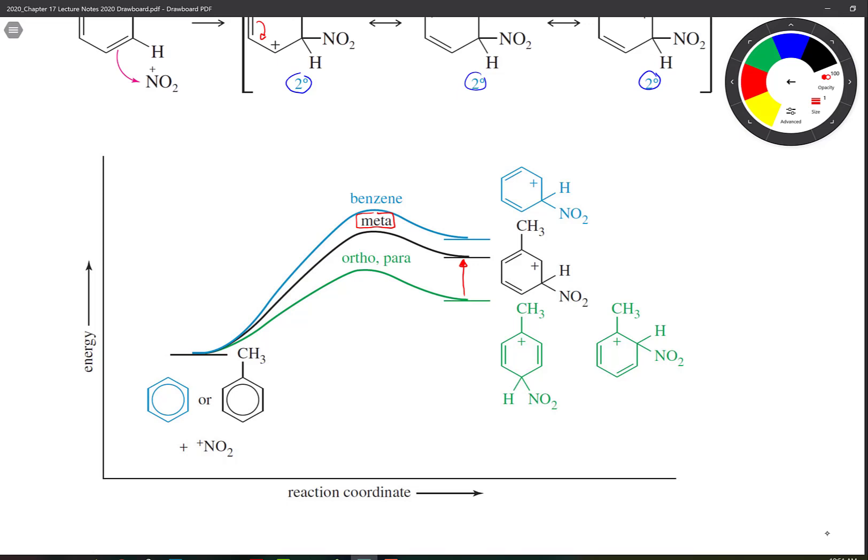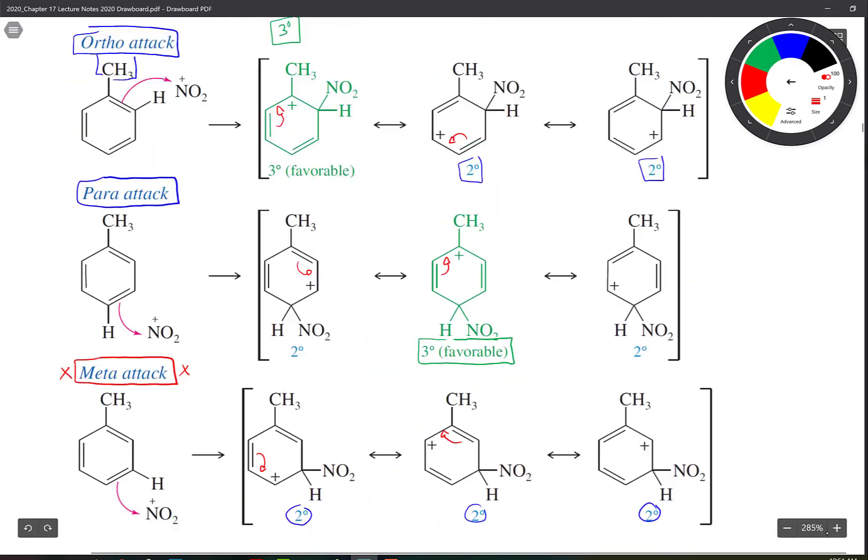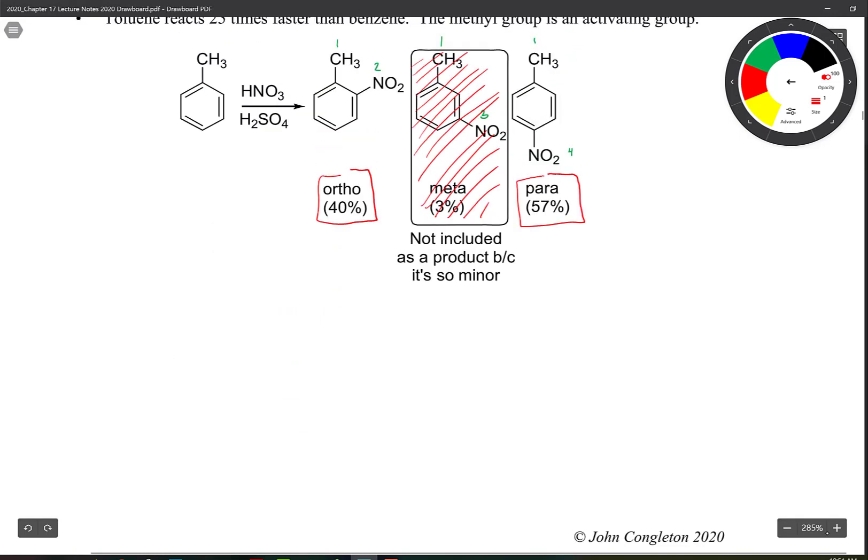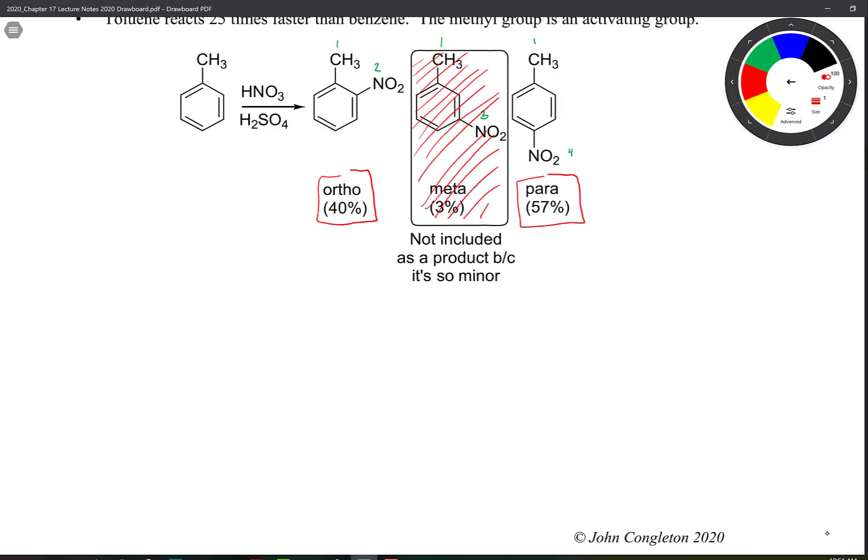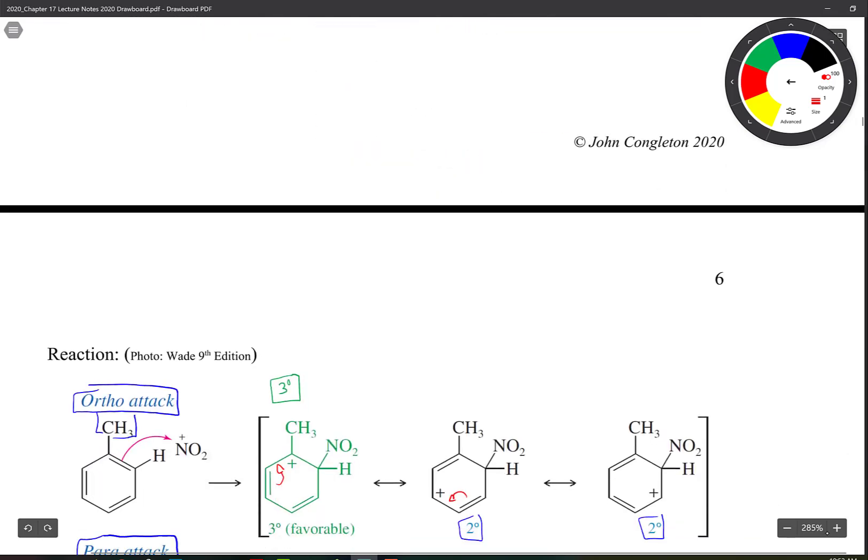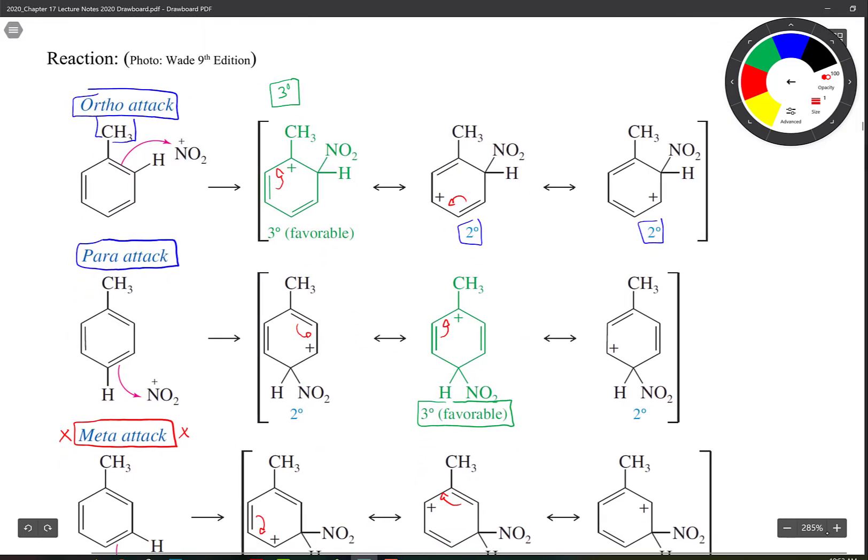Now a good common question to ask here is, if ortho and para have the same activation energy, then why are they formed at different ratios? Because it's not 45, 45, it's 40, 57 here. So you get a little bit more para than you get ortho. And part of the reason why that's the case is sterics.